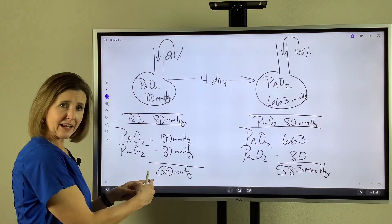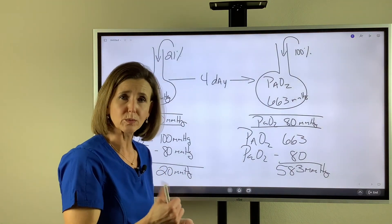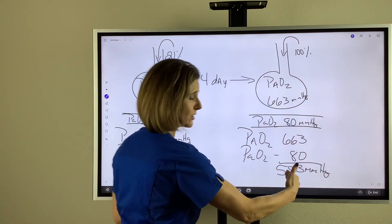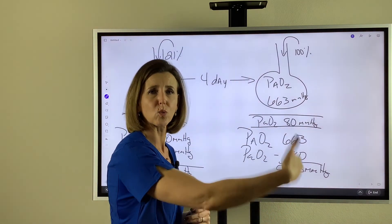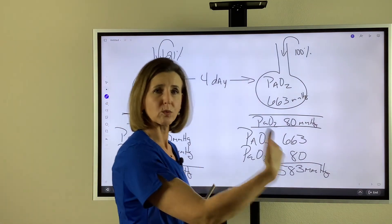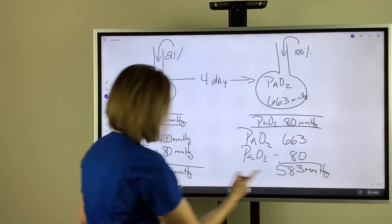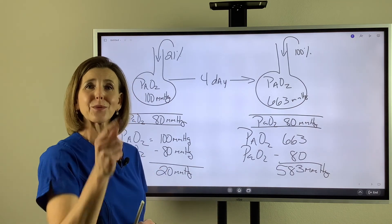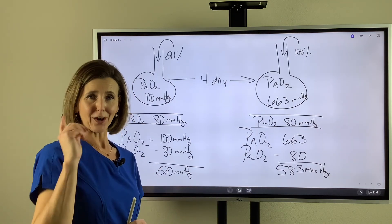A small A-a difference means the lungs are normal. If the A-a difference is increasing, the lungs are getting worse and oxygenation is declining. If the A-a difference is decreasing, oxygenation is improving. I hope this has been helpful, and I hope to see you soon.